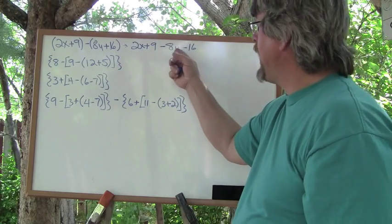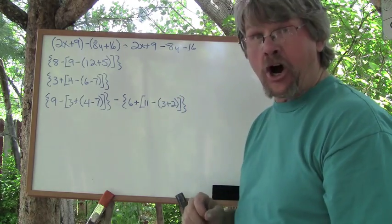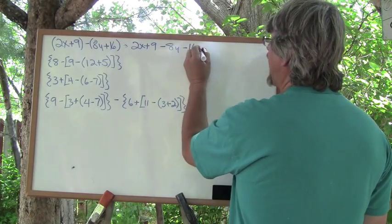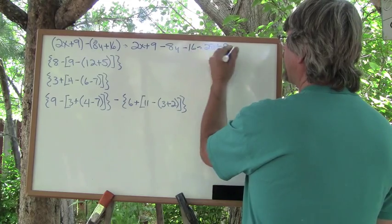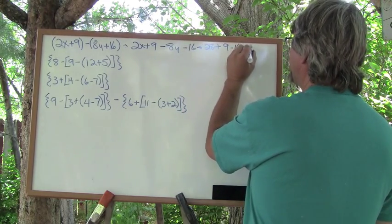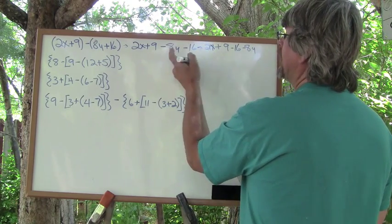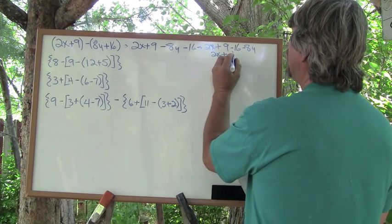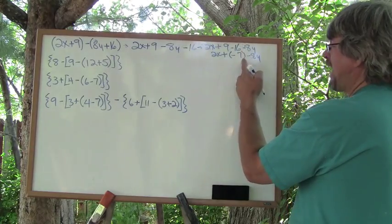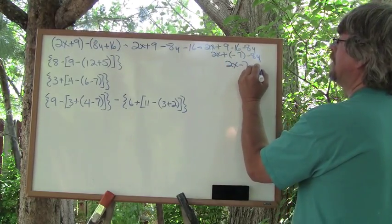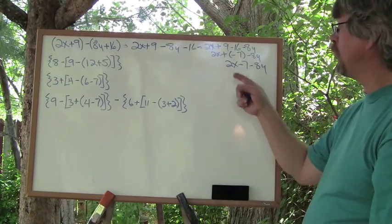Now, 2x and negative 8y are not like terms, so you can't combine them. But 9 and negative 16 are. So we rewrite this as 2x plus 9 minus 16 minus 8y. This becomes 2x plus negative 7 minus 8y, which is basically 2x minus 7 minus 8y. None of these are like terms, so that's your final answer.